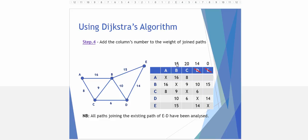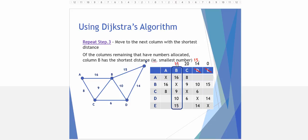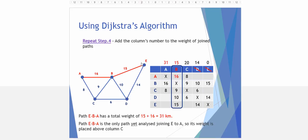So again we look at the smallest number of those that are left. 15 is our smallest number. Now we'll look at this column of B. So we add 15 to 16. From B to A we get a total weighting of 31. At the moment, that is the only path we've analyzed yet that gets us from E to B to A, and so we write that number above column A.